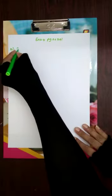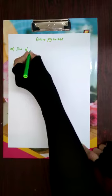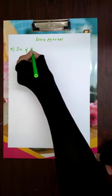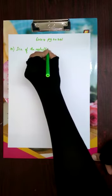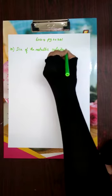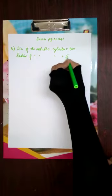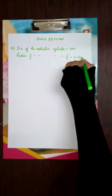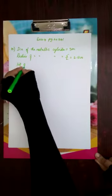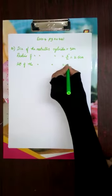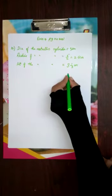So first let us write what is given. Diameter of the metallic cylinder is given as 5 centimeter. As soon as we get diameter we find the radius: radius of the metallic cylinder equals 5 by 2, which equals 2.5 centimeter. They also gave us height of the metallic cylinder, which equals 3 and 1/3 centimeter — a mixed fraction. Writing it as an improper fraction, that becomes 10 by 3 centimeter.